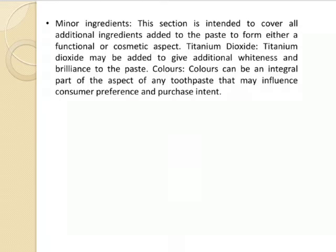Next, let's see the minor ingredients used in the preparation of toothpaste. These cover additional ingredients added to the paste for either functional or cosmetic aspects. Titanium dioxide may be added to give additional whiteness and brilliance to the paste — this is what gives products like Colgate Extra White their whiteness. Colors can also be an integral part of toothpaste that may influence consumer preference and purchase intent — for example, the red color seen in Close-Up toothpaste is a color effect that affects customer preference.